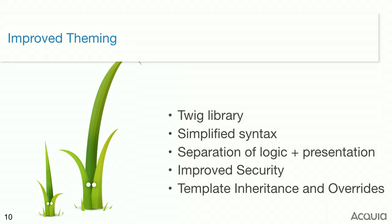Front-end developers love Twig, the new templating system in Drupal 8. Unlike PHP template, you can be an expert in HTML and CSS without also being a PHP expert — that's a rare skill set. The second improvement is security: PHP template made it easy to accidentally miss sanitization calls and introduce XSS vulnerabilities. Twig automatically sanitizes all its output, making it really difficult to introduce those vulnerabilities. It also forces a better separation between logic and presentation.